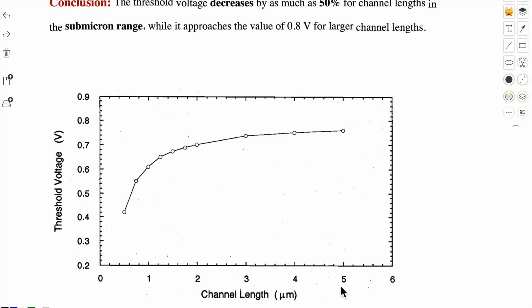Now this is the graph between threshold voltage and channel length. You can see that when our channel length is larger, the threshold voltage is also larger. And as the channel length has decreased or short channel, the threshold voltage has decreased. So we can conclude that the threshold voltage decreases by as much as 50% for channel lengths in the submicron range, while it approaches the value of 0.8V for larger channel lengths.